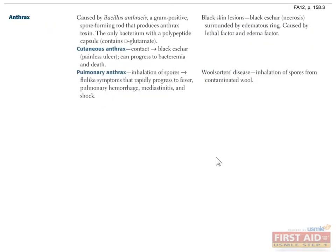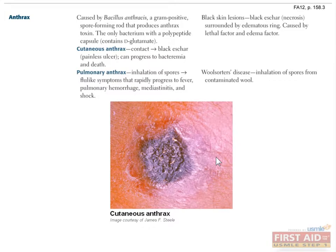Bacillus anthracis is a gram-positive rod that produces spores and anthrax toxin. You may recall the anthrax attacks of 2001 during which envelopes containing anthrax spores were sent to several media offices. Bacillus anthracis can only be transmitted via spores and presents differently depending on the route of contact. Ingested anthrax causes gastrointestinal anthrax, which is highly lethal but rare. Skin contact with anthrax spores causes cutaneous anthrax, which presents as a painless ulceration that goes on to become a necrotic black eschar.